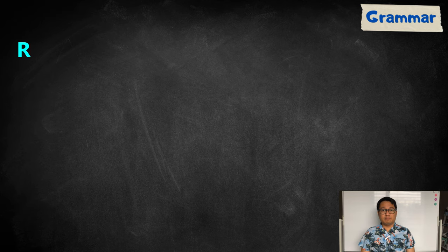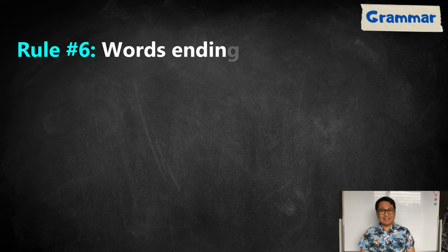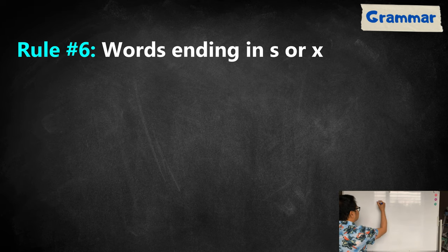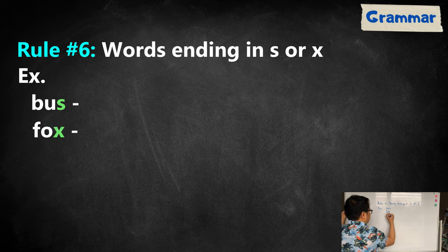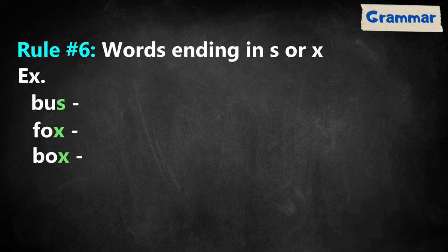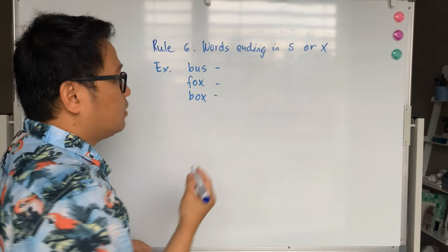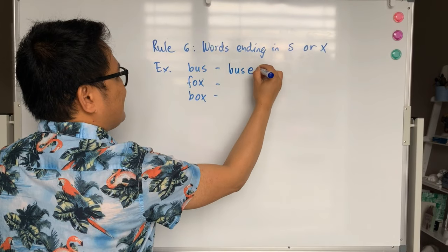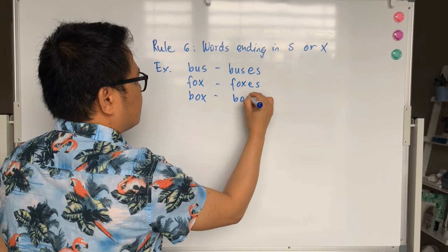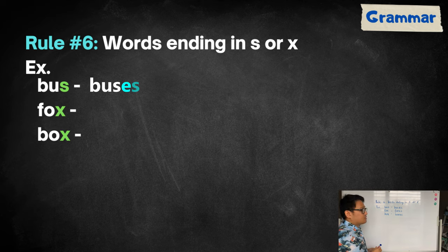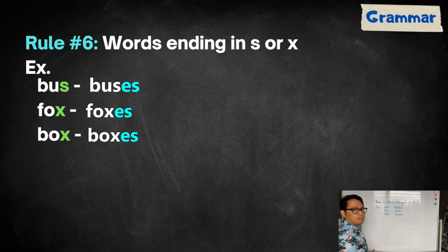Rule number six is for words ending in S or X. For example, bus for S, fox for X. To make these words plural, you just need to add E-S at the end of the word. So, bus will become buses, fox will become foxes while box will become boxes.